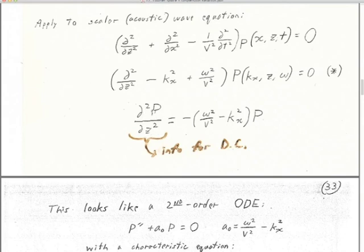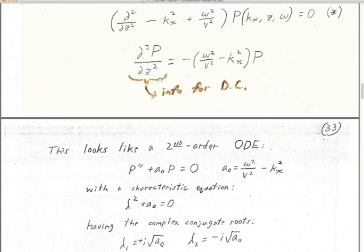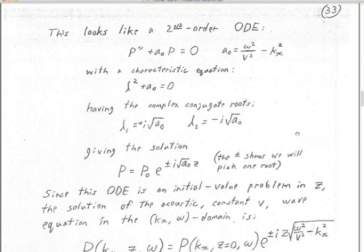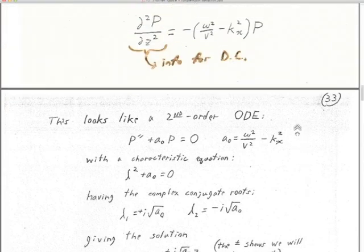We got the second derivative — that's the information we need for downward continuation. If we transform our data at z=0 to kₓ and ω, then we just multiply by these numbers. As we loop through our data set, we know which ω we're on, which kₓ we're on — we have to assume a velocity, that's the most troublesome part — and then we can actually calculate this derivative in the Fourier domain. Very easy. No finite differences or anything else at all.